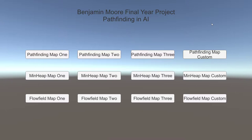Another goal was to apply optimization techniques to these algorithms to determine if there was an actual increase in performance. The last was a more advanced algorithm called Flowfield, to demonstrate a more efficient way of multiple units traversing across a map, and also to see if I could implement this advanced algorithm.